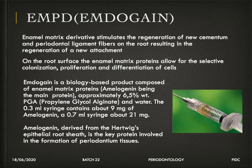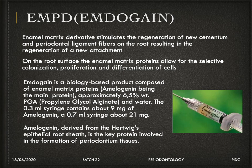The next material is Emdogain, which is amelogenin — an enamel matrix protein found in enamel and cementum. The idea is to regenerate cementum. True regeneration requires regeneration of all four structures: periodontal ligament, cementum, alveolar bone, and gingival connective tissue. If any one is missing, it is only repair, not regeneration. Emdogain specifically targets cementum regeneration.